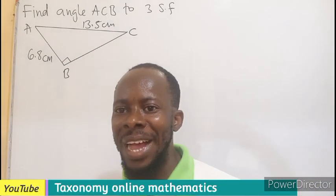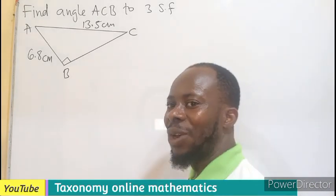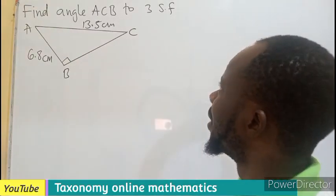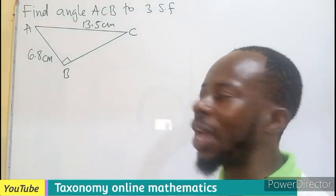Welcome. Join me as we provide answer to this question. We have to find the angle ACB to three significant figures from this right angle triangle.